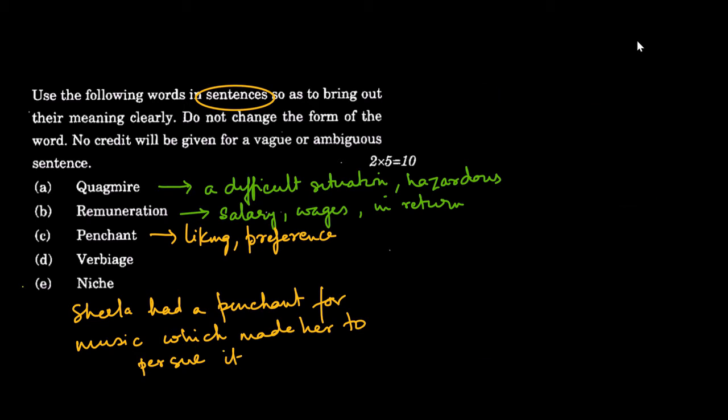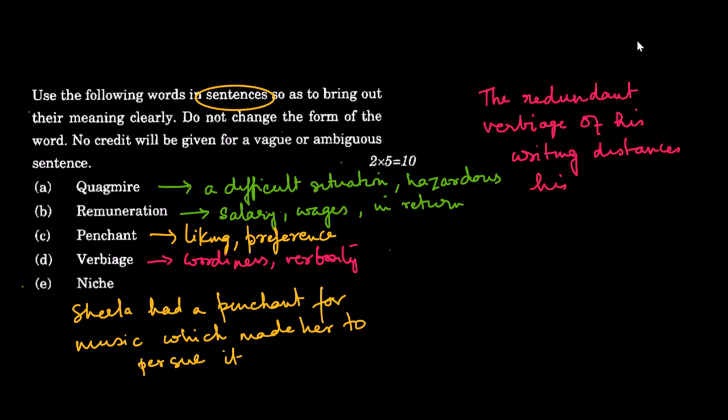Next, verbiage. This means wordiness, a lot of words, unnecessary words or verbosity. So something which has a lot of unnecessary words. So the sentence could be, the redundant verbiage of his writing distances his readers.